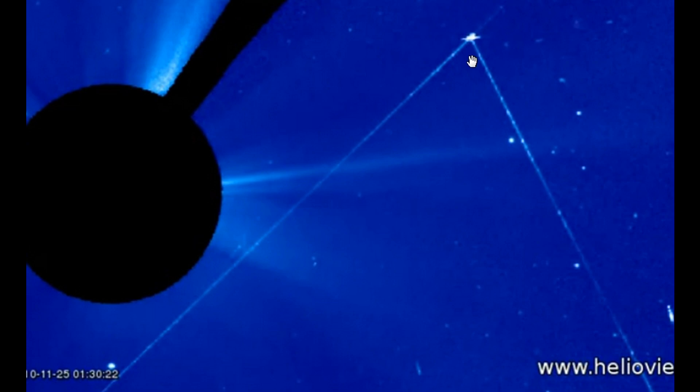There are four countries that I'm aware of that have solar satellites that are orbiting the sun that are also equipped with lasers and other spectrographic instrumentation. Japan, China, Russia, America.